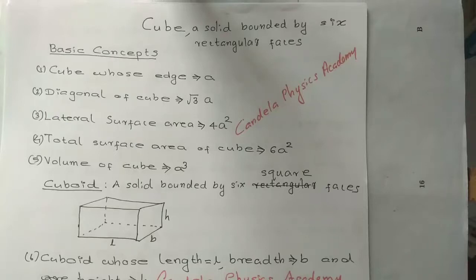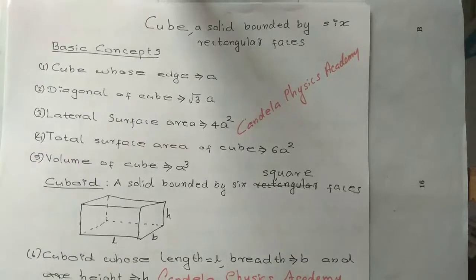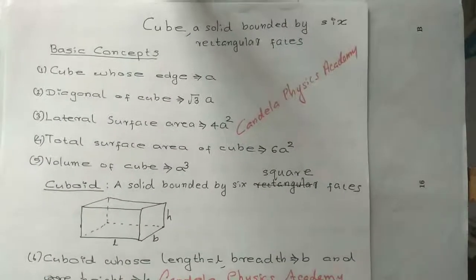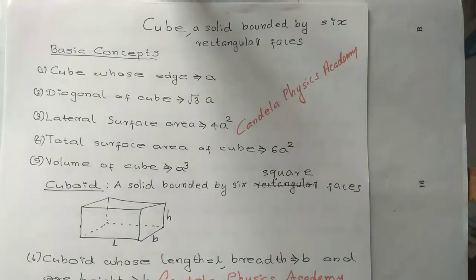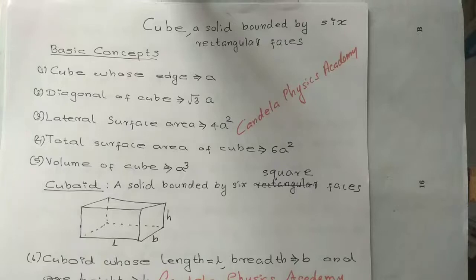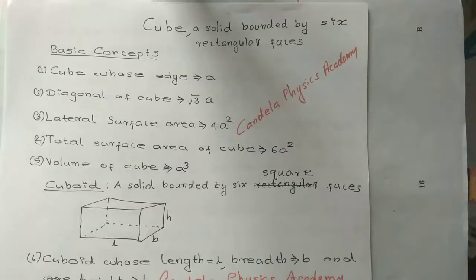This is the cube. If we don't have an equation, then we can get rid of it. This formula is integral for the important form of root. A cube has 6 rectangular faces and is a basic unit. The diagonal of a cube is root 3a, lateral surface area is 4a², total surface area of cube is 6a², volume of cube is a³.